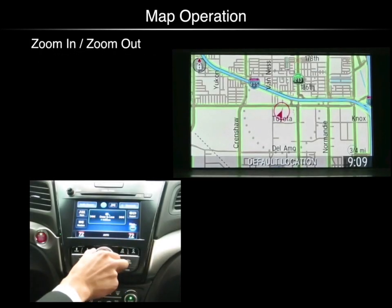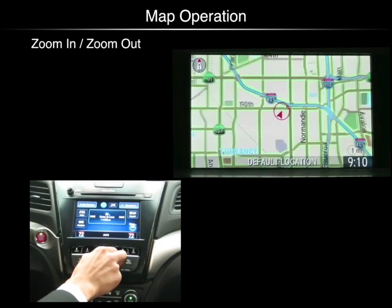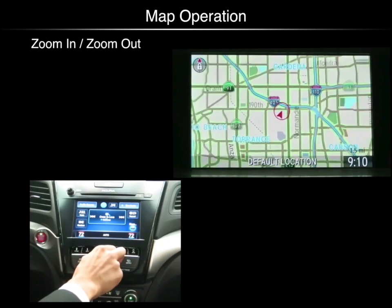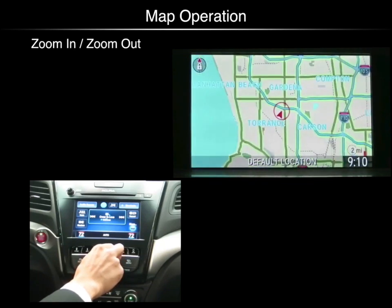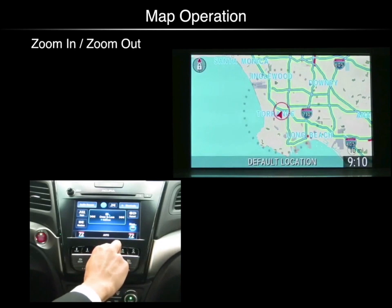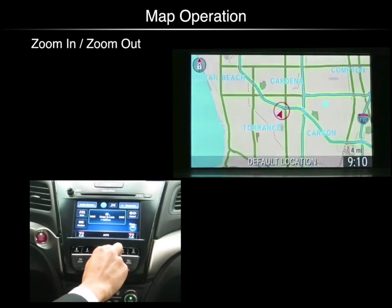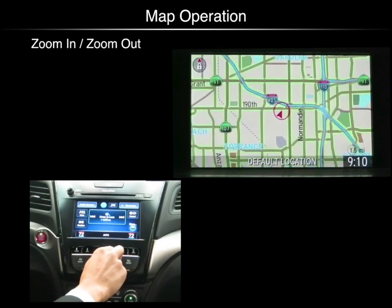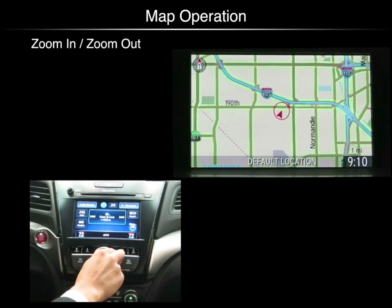The map is simple to operate. Turning the interface dial counterclockwise zooms the display out, and turning the interface dial clockwise zooms the display in.